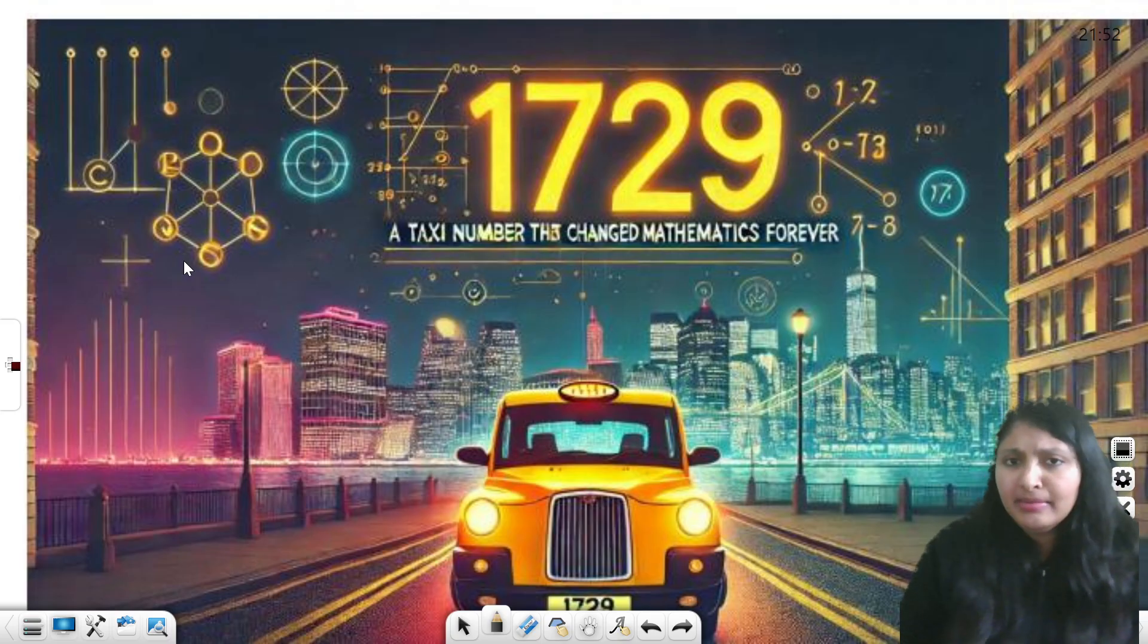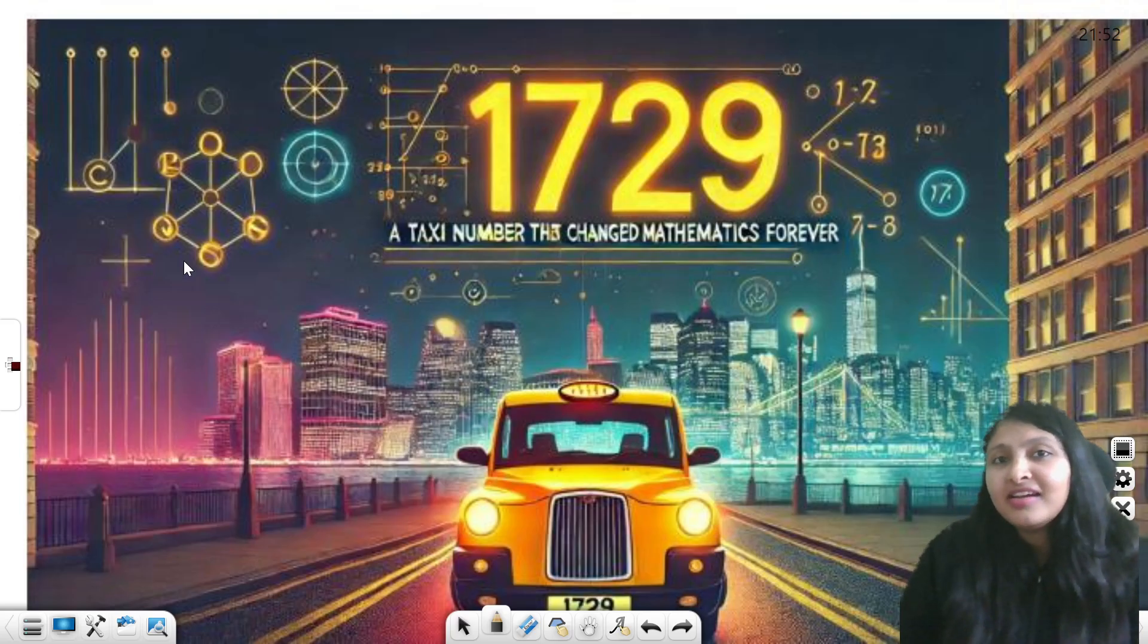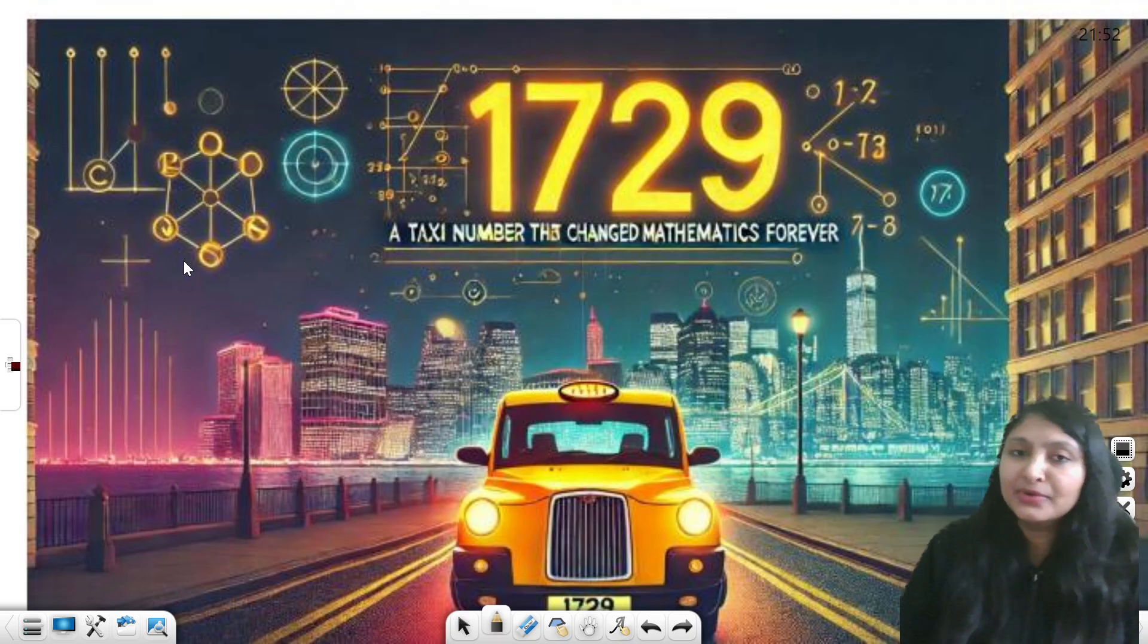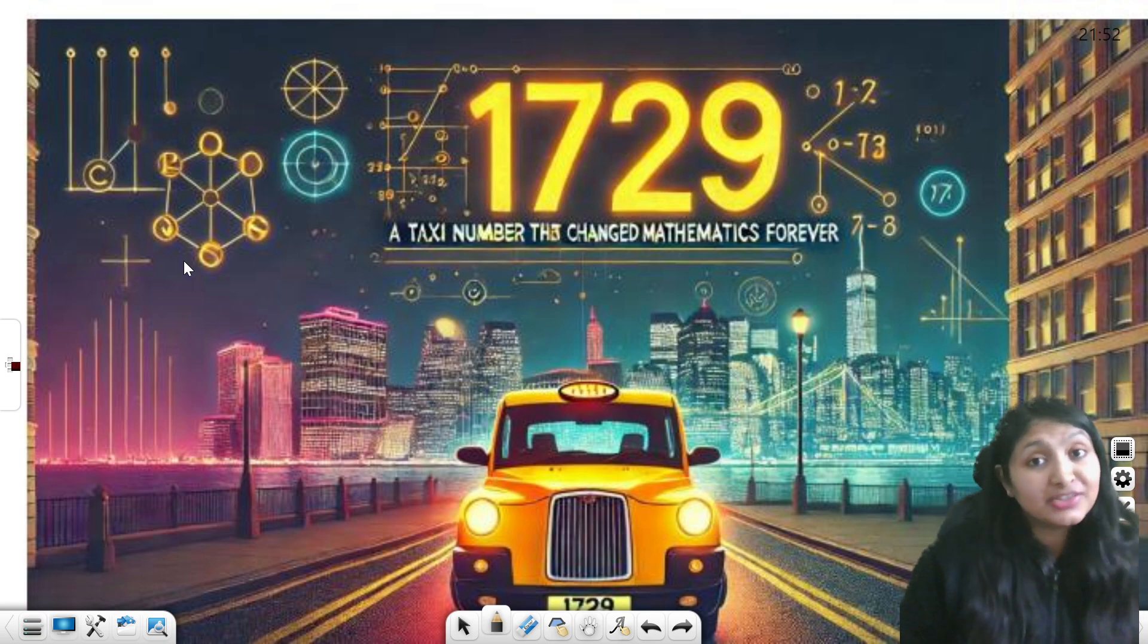Hardy booked a cab for the visit, and Hardy had a habit of looking at the numbers around him and thinking about that particular number. Very amazing property. So he would be thinking about the numbers, finding out what is interesting about that number.